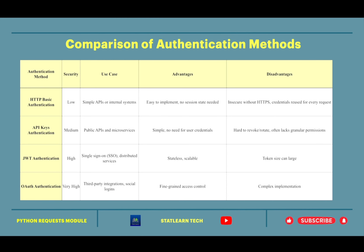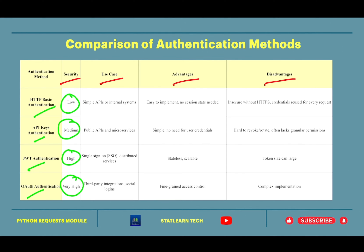Now let us compare these authentication methods based on security, use case, advantages, and disadvantages. HTTP Basic Authentication has the lowest security, while OAuth has the highest. JWT is also highly secure, and API Keys have a medium level of security.